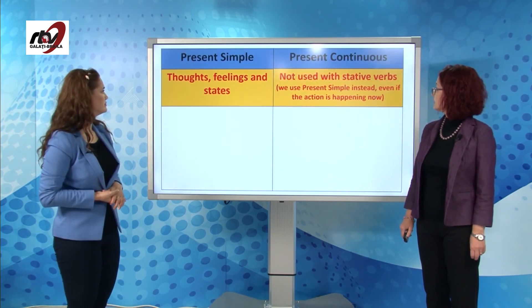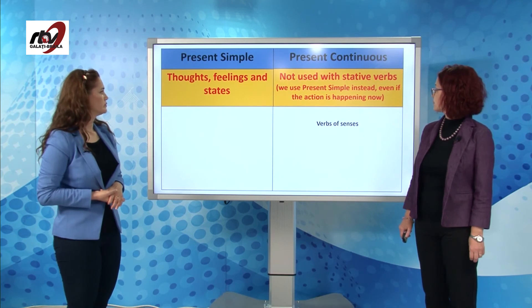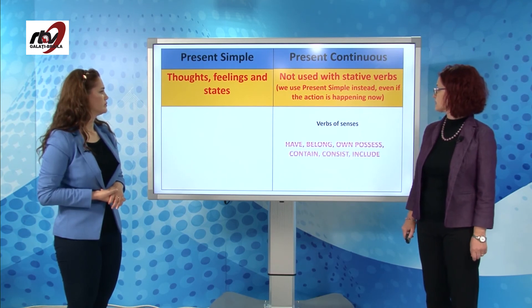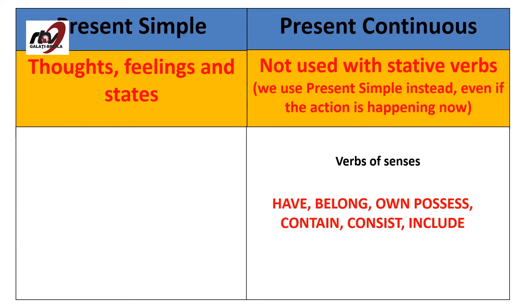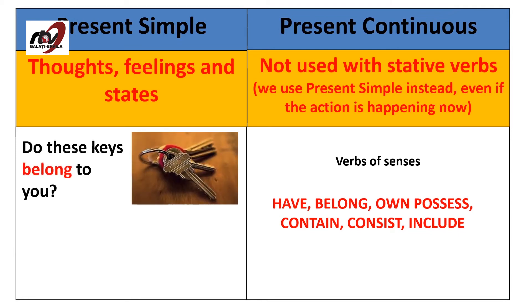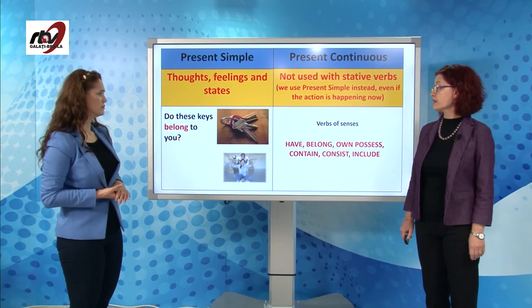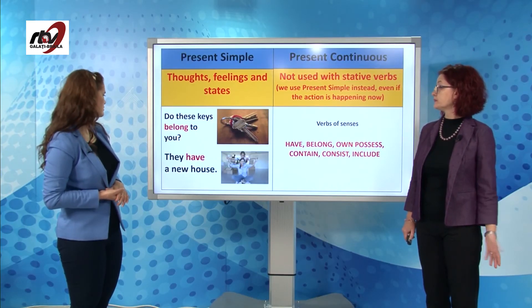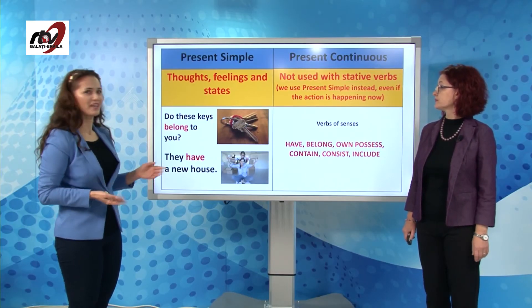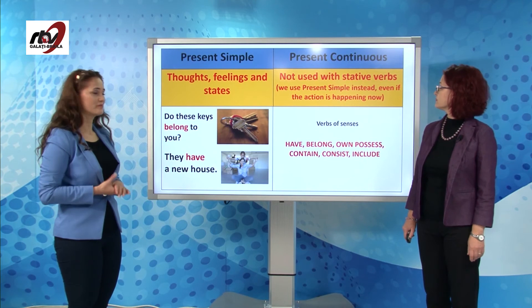The last category of stative verbs is verbs of possession: have, belong, own, possess, contain, consist, include. Examples: do these keys belong to you? Yes, they're mine. And they have a new house.